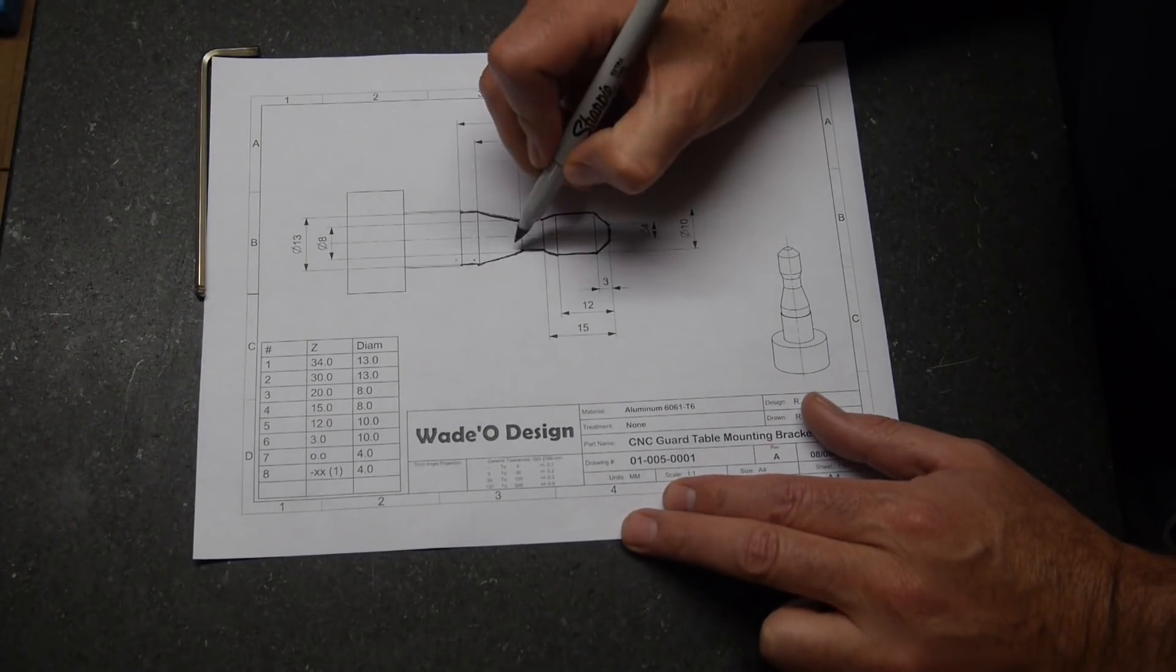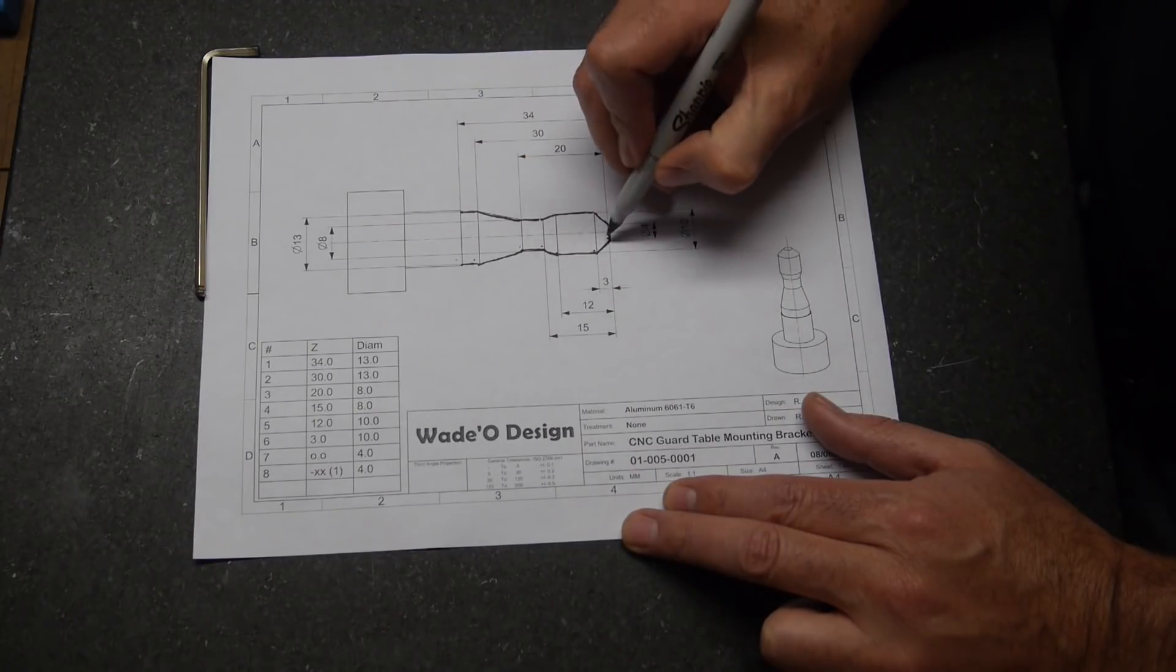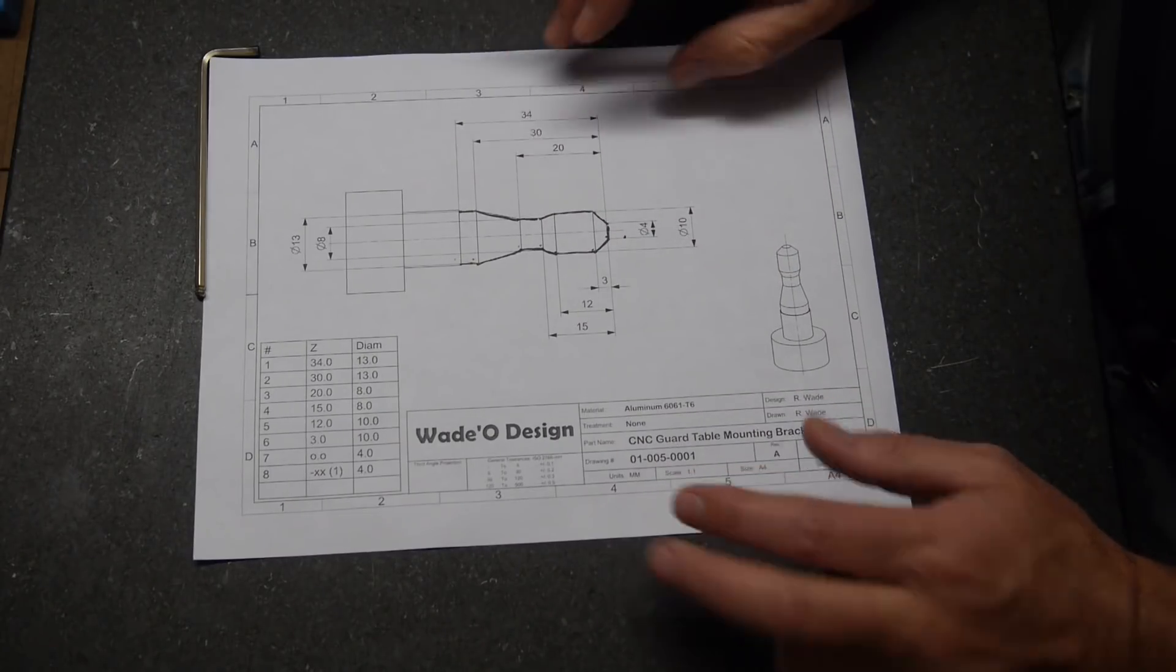It's got quite a few points just to do this little simple guy. One, two, three, four, five, six, seven. And then I'll make a point out in space off the part just so I come off the part. So eight points total.